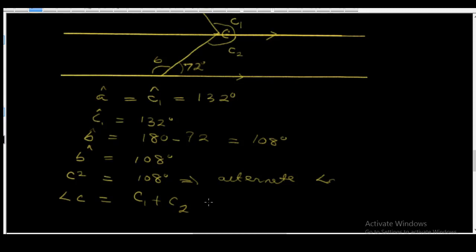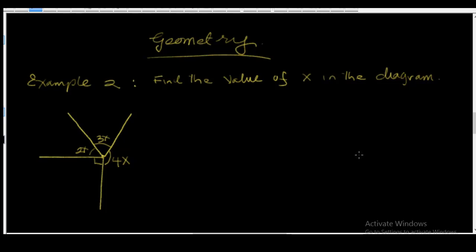Angle c equals c1 plus c2. C1 is 132 degrees and c2 is 108 degrees, so 132 plus 108 gives us c equal to 240 degrees. Therefore, angle a is 132 degrees, angle b is 108 degrees, and angle c is 240 degrees.